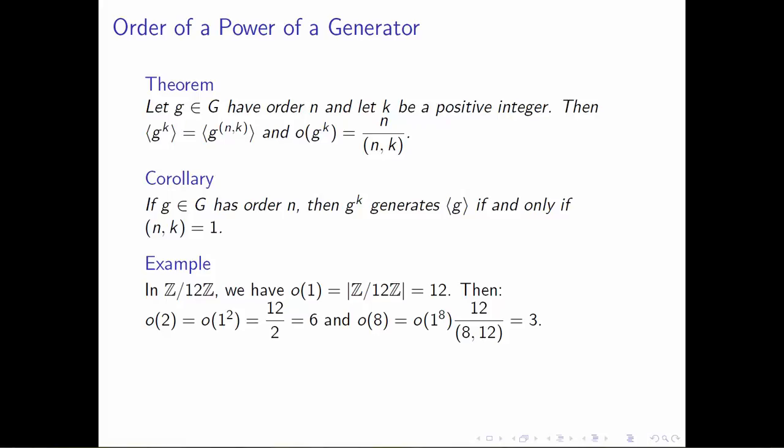Our goal, if we want to determine the order of any particular element, is to view those elements as powers of the generator. For example, take 2 and view that as 1 squared. As soon as we've done this, we can apply this theorem: the order of 1 is 12, our integer k is 2, and the greatest common divisor of 12 and 2 is 2, so the order of the element 2 inside Z mod 12Z is 6.